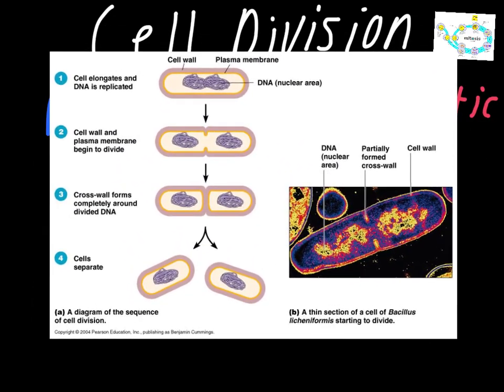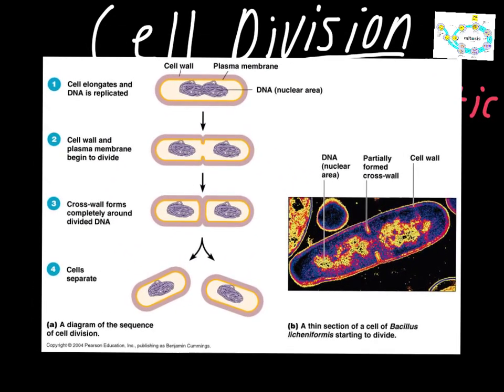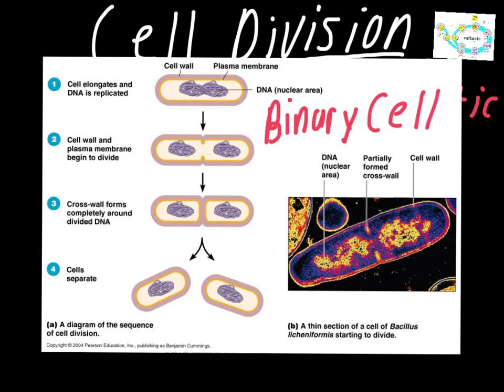We'll start with prokaryotic cells. This process is called binary fission, and it's different from mitosis in eukaryotic cells in that it's a lot more simplistic. The first thing that happens is the cell elongates — it gets a little bit bigger — and the DNA is replicated, which means it's copied. So we've got a new set of DNA. The next thing to happen is that the cell wall and the plasma membrane begin to divide, so one copy of DNA is now on the right and the other is on the left.